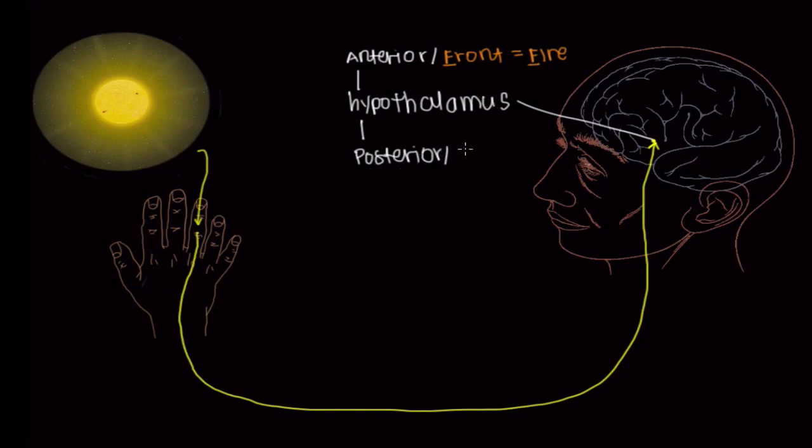Well, what if it's cold? In those situations, we'll use the posterior part, or the back of our hypothalamus, to respond to climates that make us say, BRRRR. We say BRRRR because it's really cold outside, so we use the back of our hypothalamus. Okay, so that all sounds good, but what happens after our brain knows that it's really hot outside?